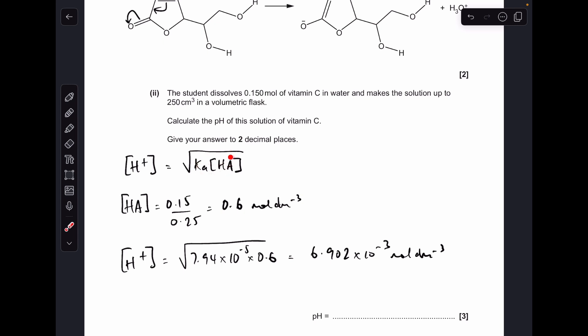When you put the numbers into the square root of Ka times H equation, the H+ concentration comes out at that. We'll just minus log this to get the pH, and remember we've got to give it at two decimal places, which comes out at 2.16.